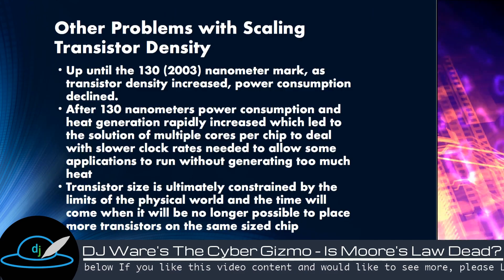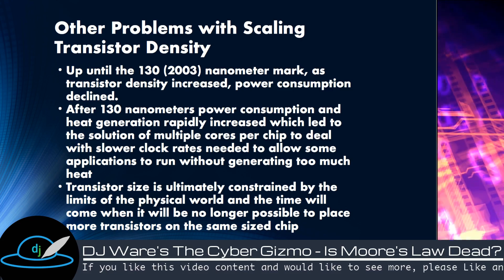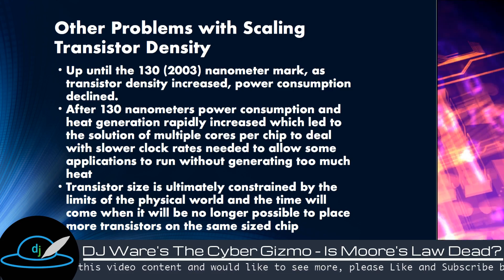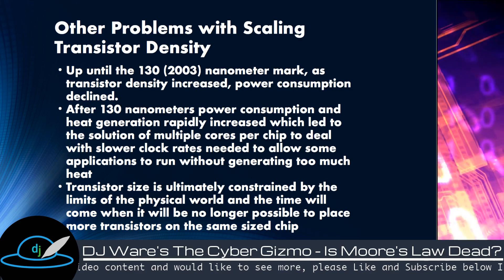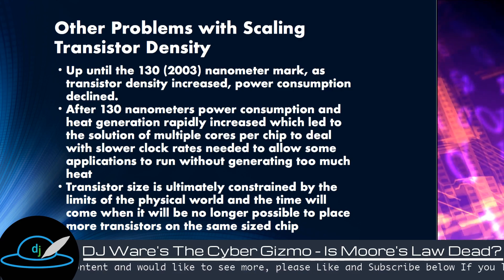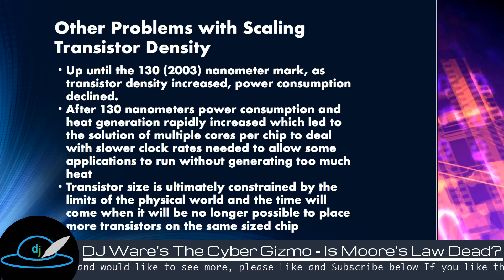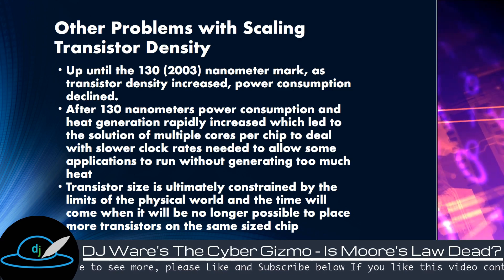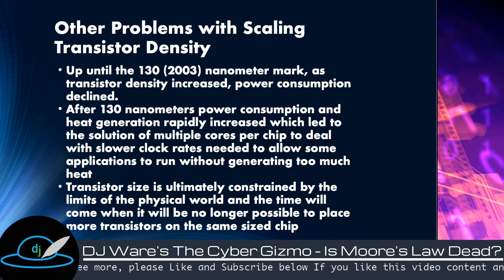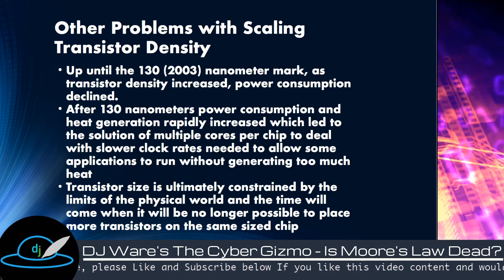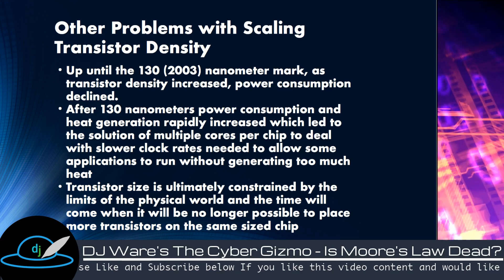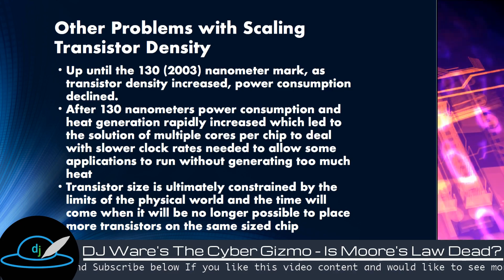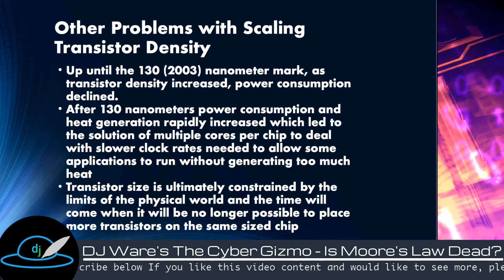So what was the problem? The magic mark was 130 nanometers. When chip densities were above 130 nm — all good. We didn't have any problem with the thermal performance of the chips. Yeah, the Pentium 4 ran hot, but it didn't self-destruct. Once we got below 130 nanometers, the heat generation went off the scale.